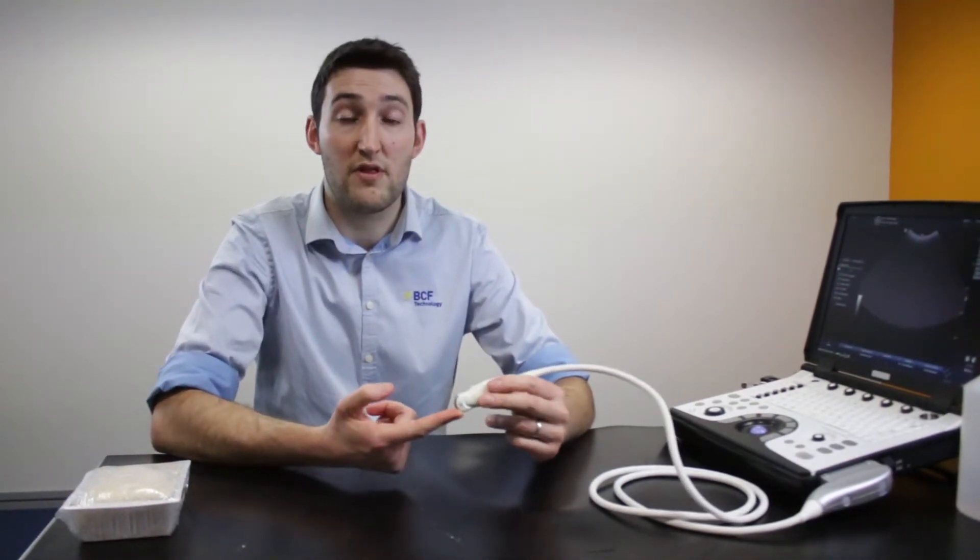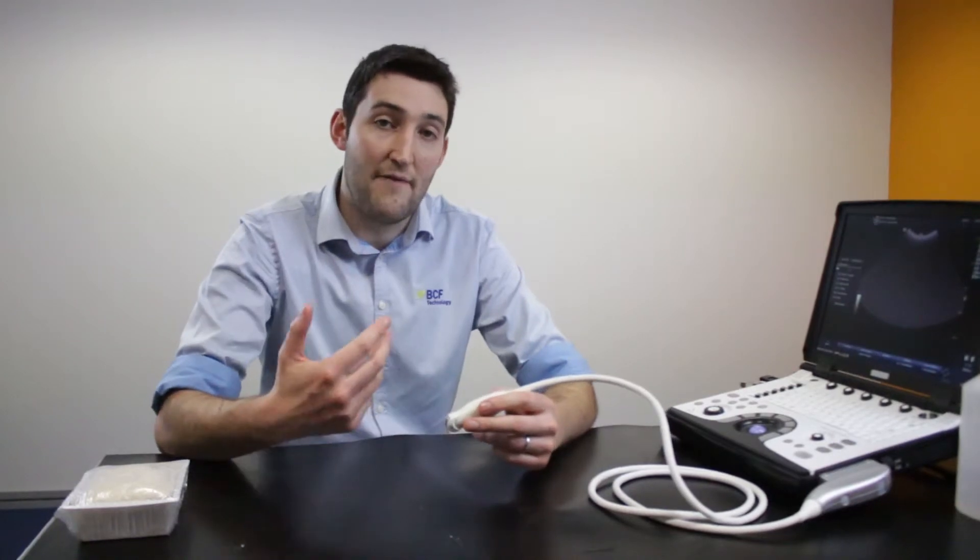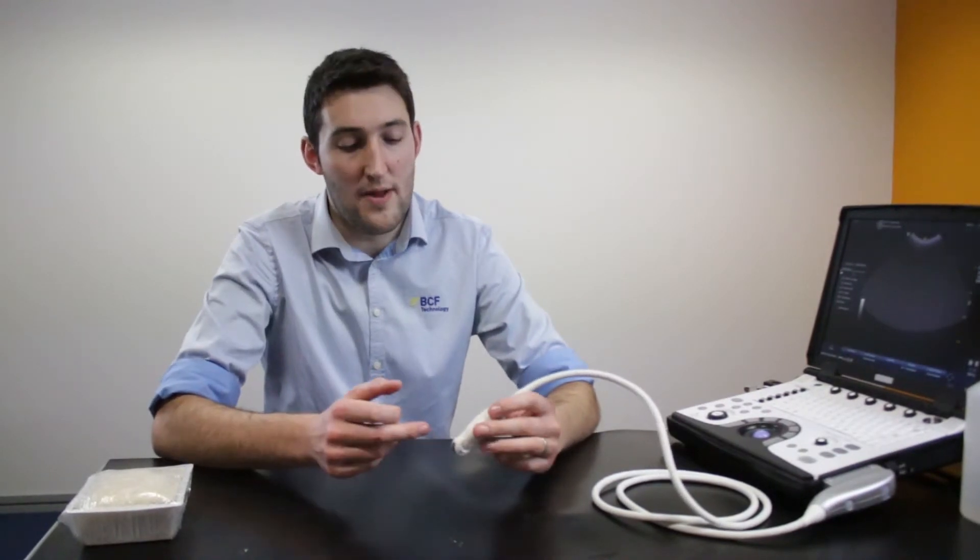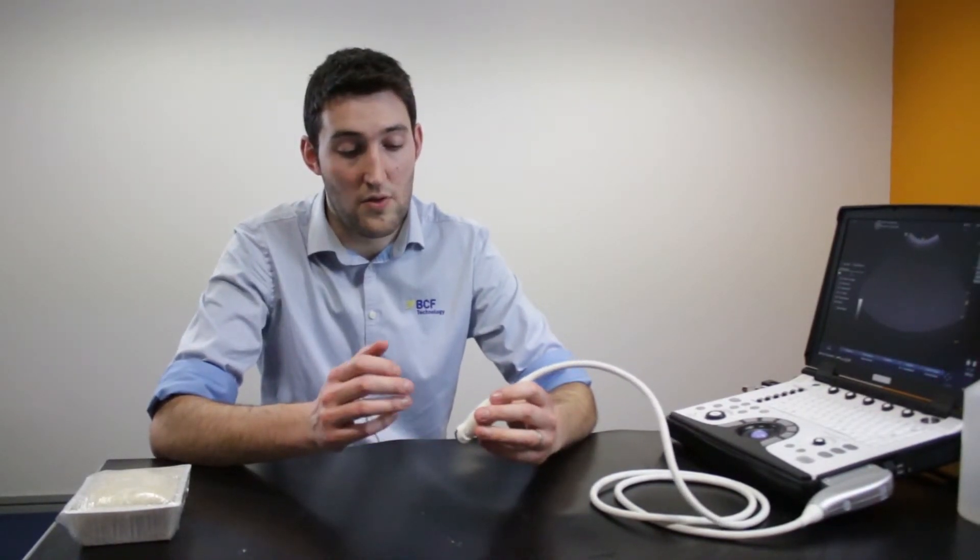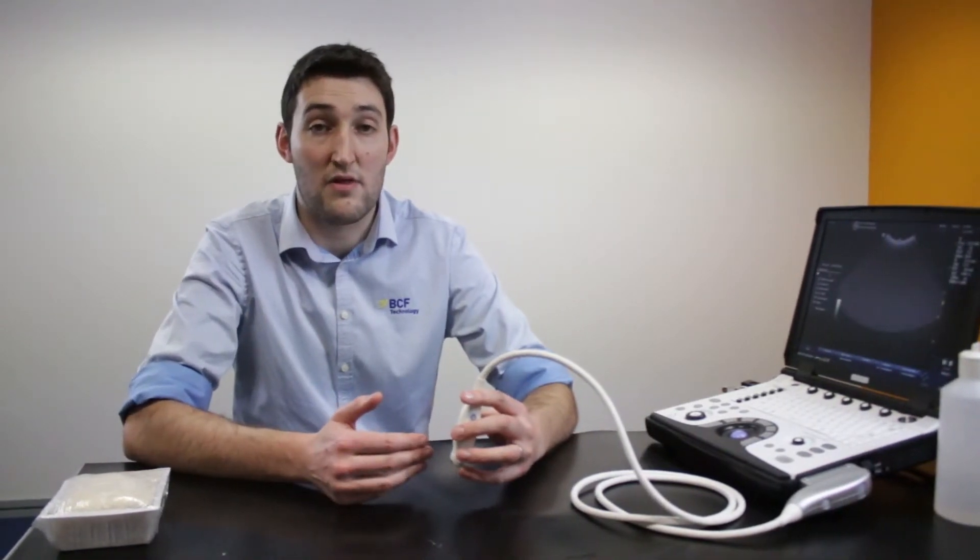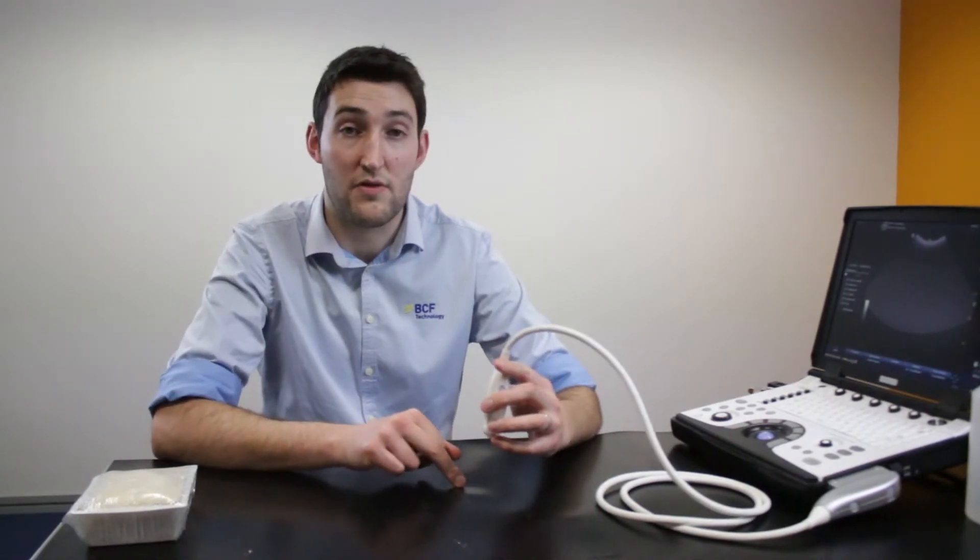Micro-convex probes also tend to be reasonably high frequency and for taking these samples we want really to be trying to get the frequency as high as we can. It's quite important to get the structure you're going to be sampling onto the screen, onto the image first. Optimize the settings of your machine to get the best image you can and again ensuring that the frequency is as high as possible while still enabling you to see deep enough to see the thing you want to sample.